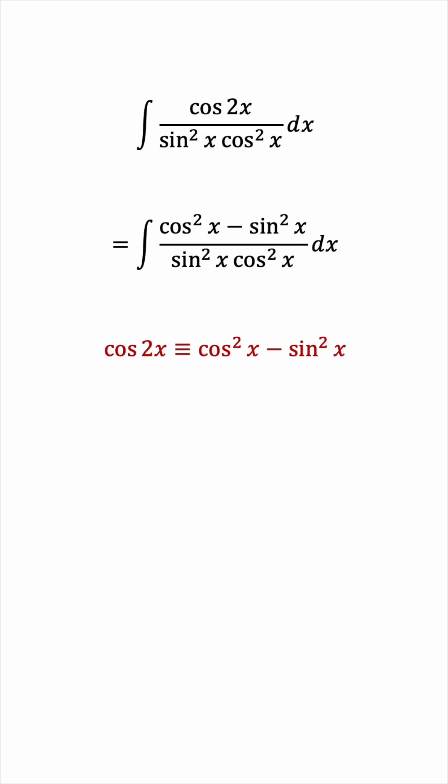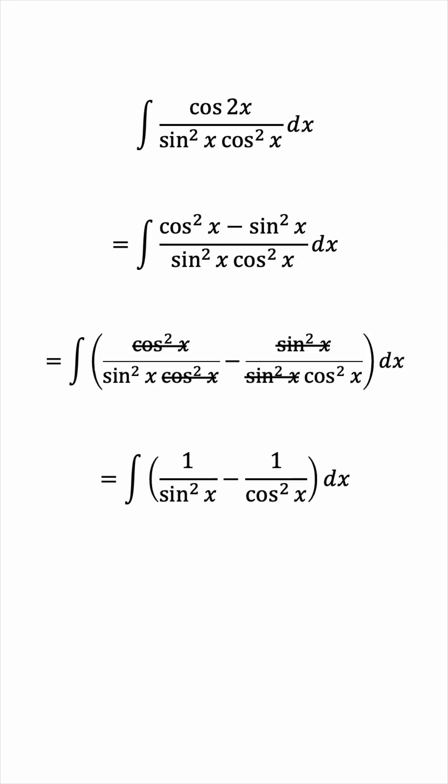So we can now split the fraction, and the cosine squared will cancel in the first one, and the sine squared will cancel in the second one, leaving us with 1 over sine squared minus 1 over cosine squared.